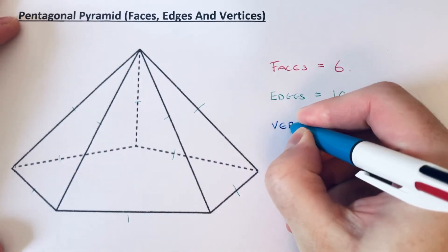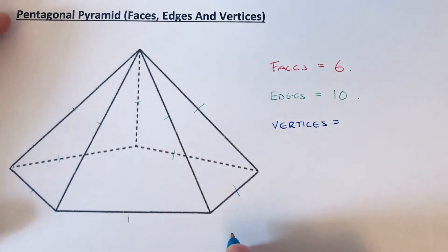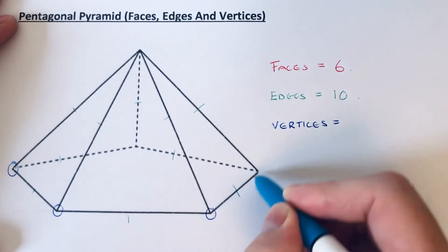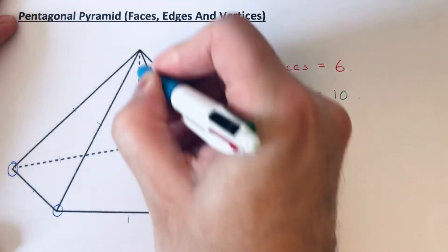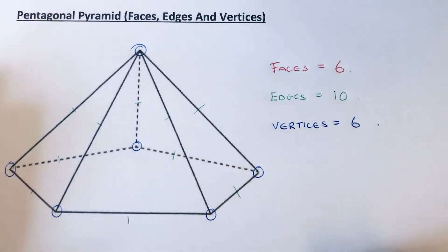basically the sharp bits. So we've got one, two, three, four, five, six - and that's your final answer.